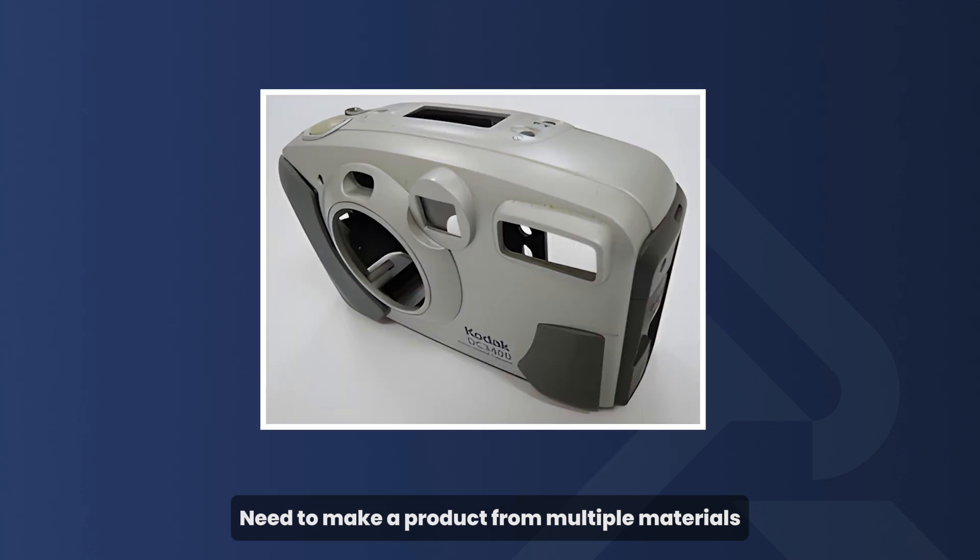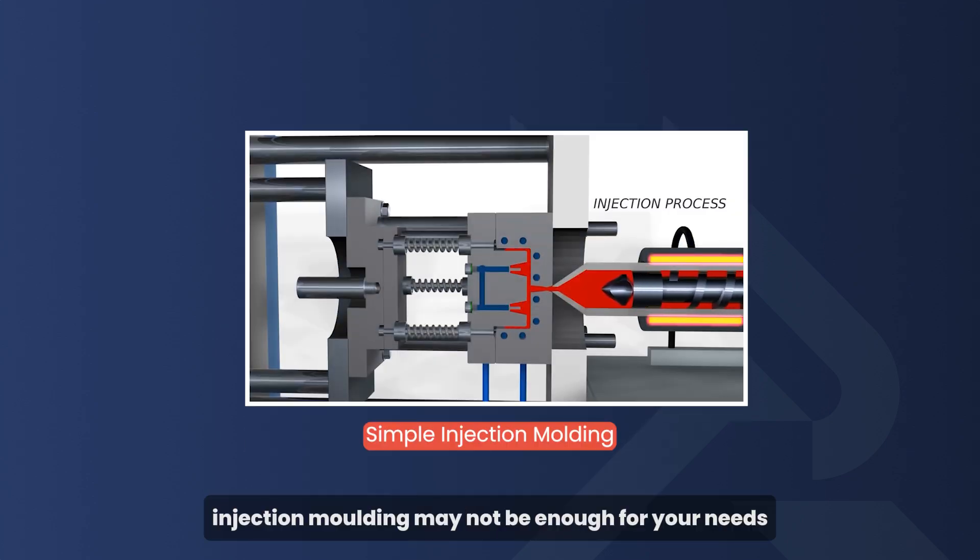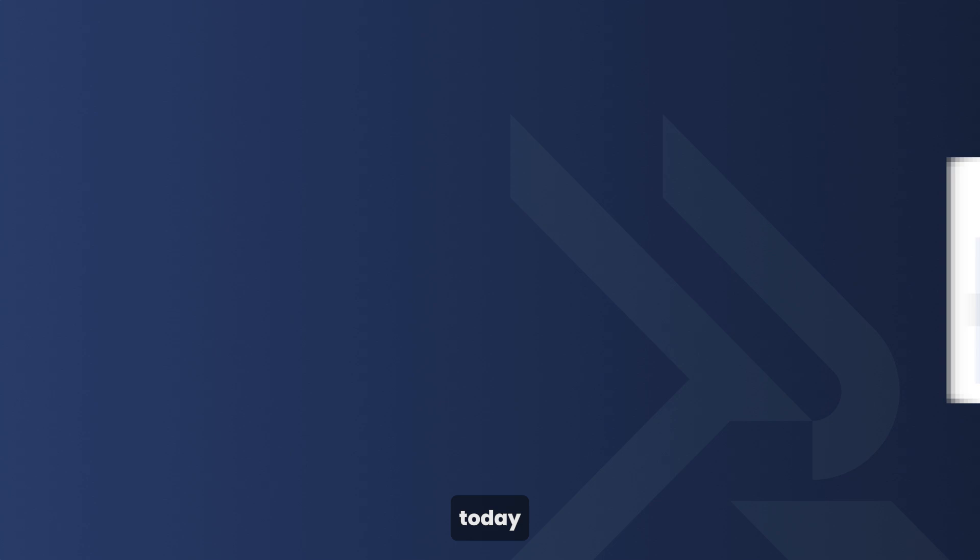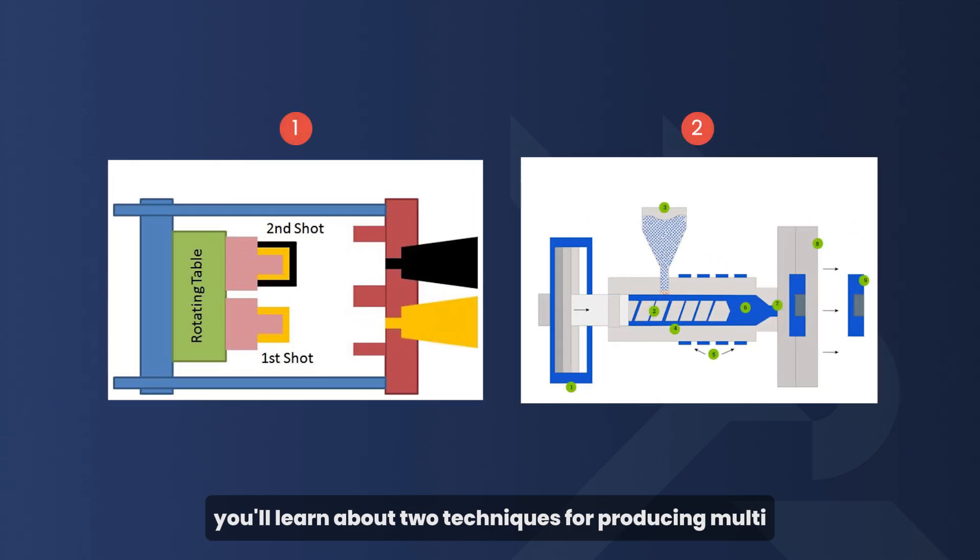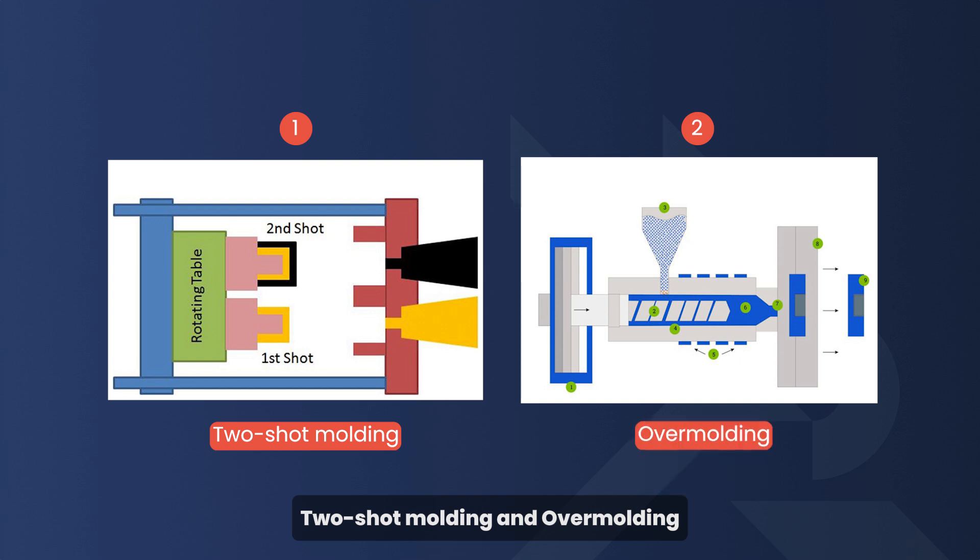Need to make a product from multiple materials? Simple injection molding may not be enough for your needs. Today you'll learn about two techniques for producing multi-material and multi-colored parts: two-shot molding and over-molding.